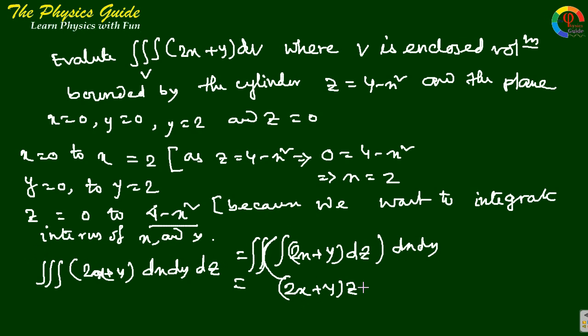We put in the limits: z from 0 to 4 - x², giving us (2x + y)z evaluated from 0 to 4 - x², with x from 0 to 2 and y from 0 to 2.